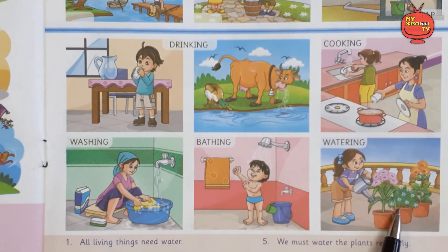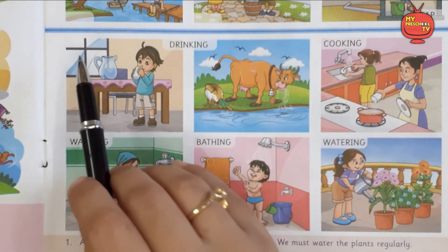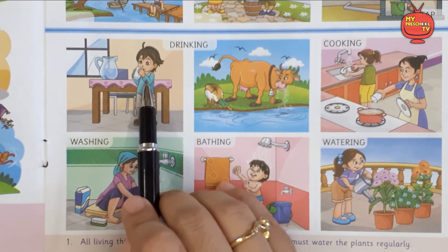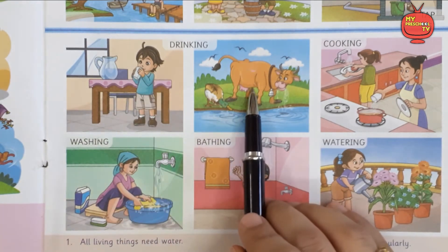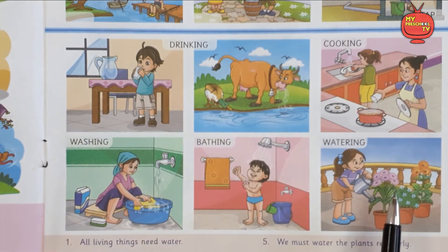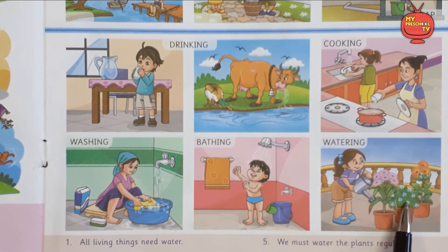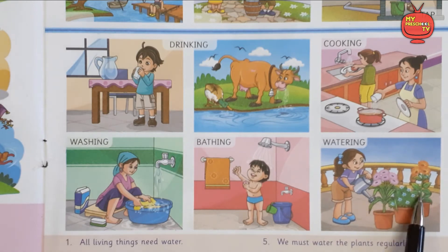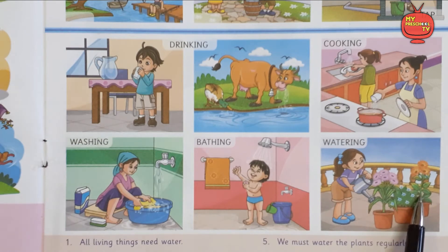Watering — watering means watering plants. As I already told you, all living things need water, whether it will be human beings, animals, or plants. Plants also need water regularly to grow and to survive. Without water, plants will die. So water is very useful for plants. We must keep watering our plants daily and regularly.